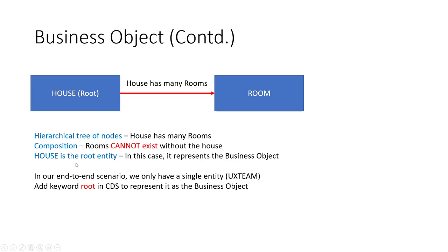In our end-to-end scenario, we only have a single entity — UX team — with no child nodes. That's okay. What we need to do is add the keyword 'root' in the CDS view to represent it as our business object. So we are going to mark UX team as the root, and that will represent the business object.